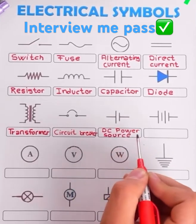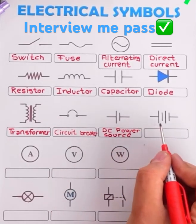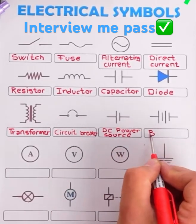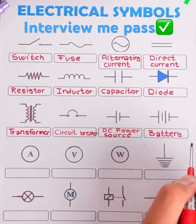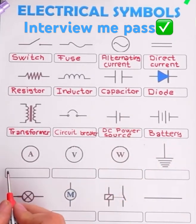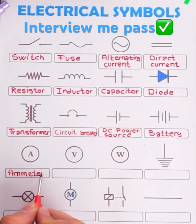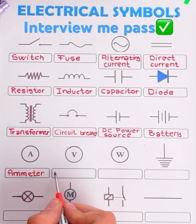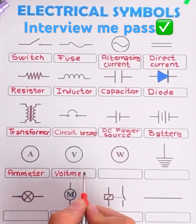The second symbol here is of a variable resistor. The resistance offered in the circuit can be varied or changed in this type of resistor.